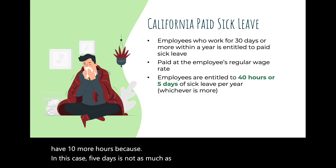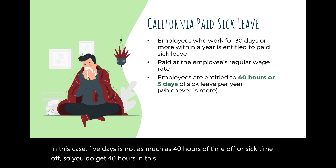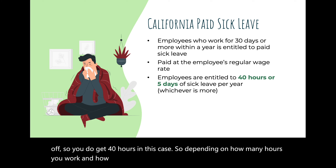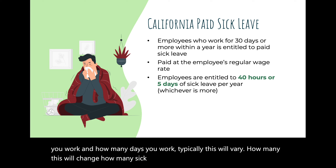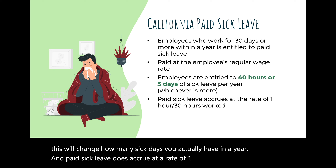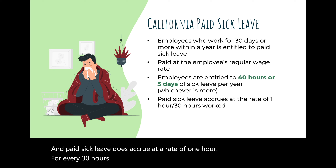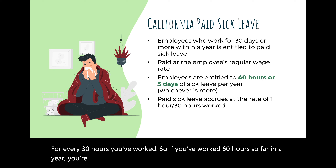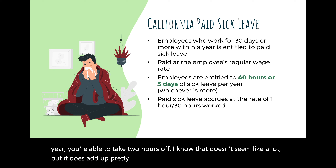Depending on how many hours and days you work, this will change how many sick days you actually have in a year. Paid sick leave accrues at a rate of one hour for every 30 hours worked. If you've worked 60 hours so far in a year, you are able to take two hours off. It does add up — try not to get sick at the beginning of your employment, as you accumulate more sick time the longer you work for a company.